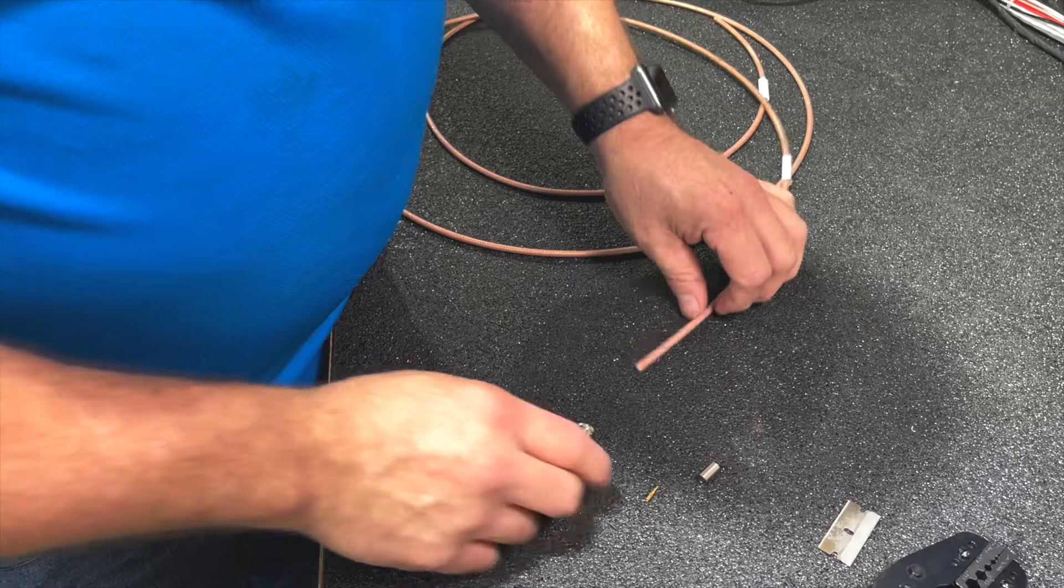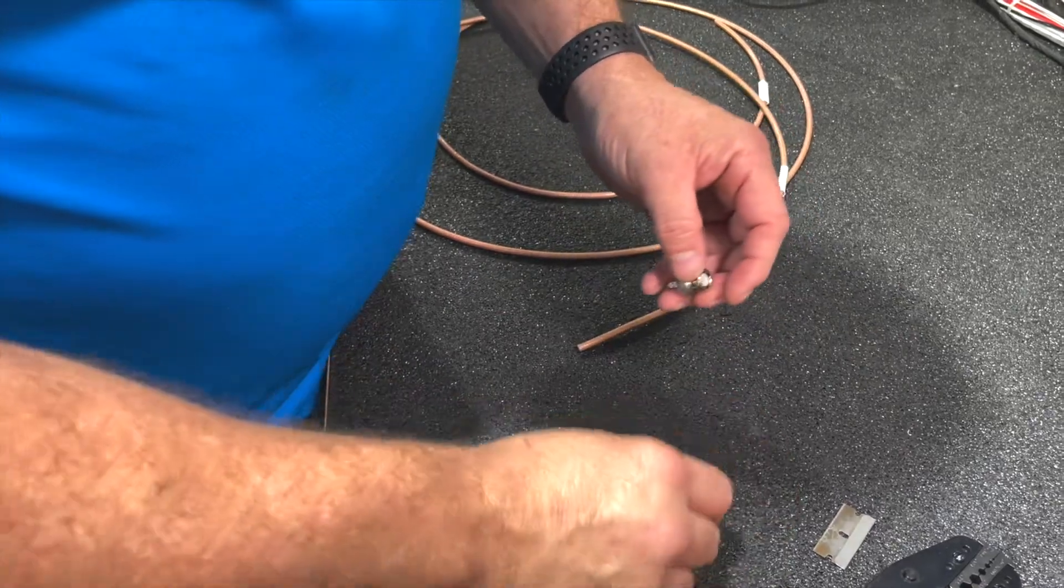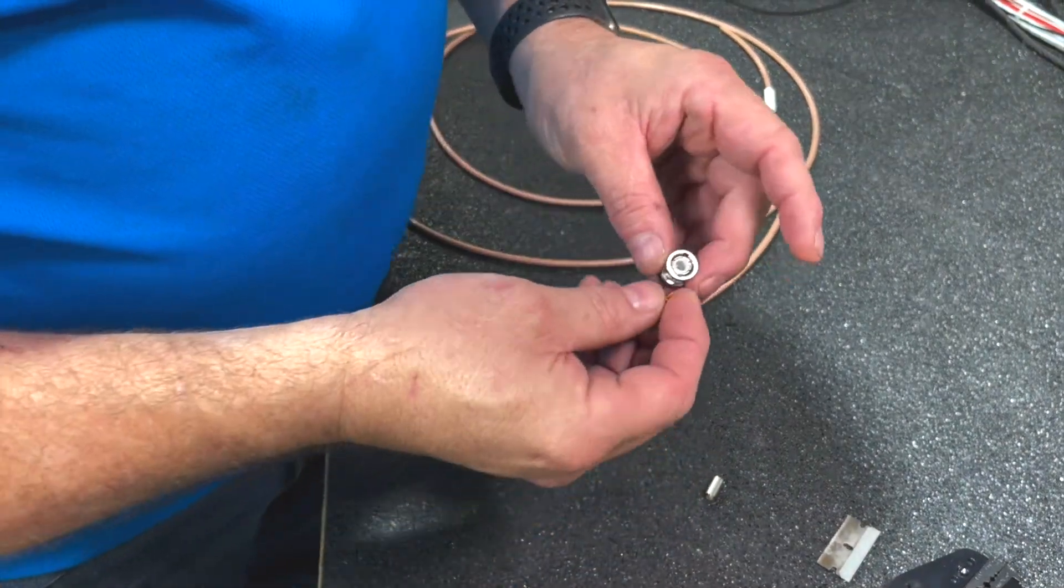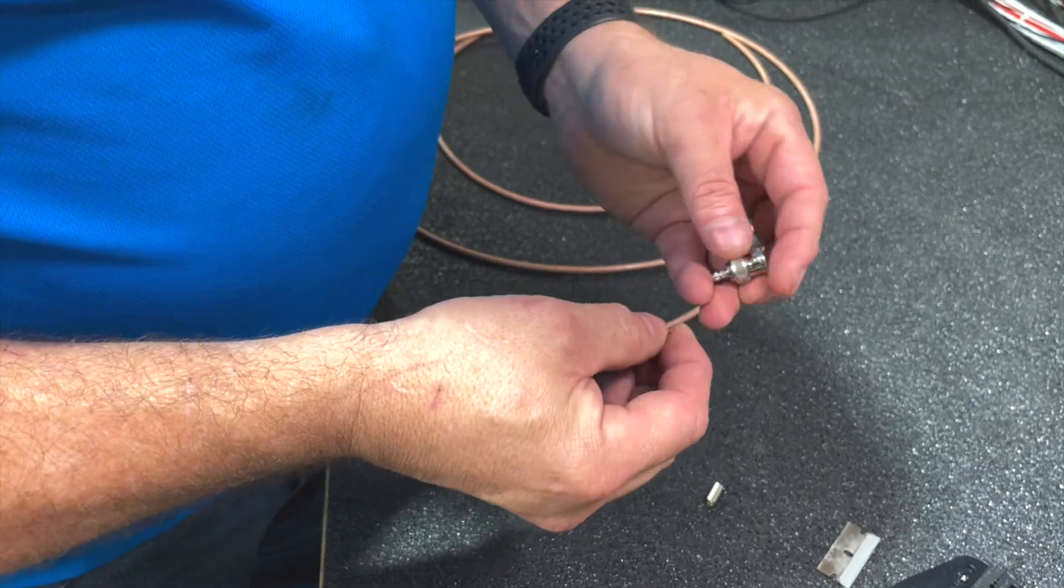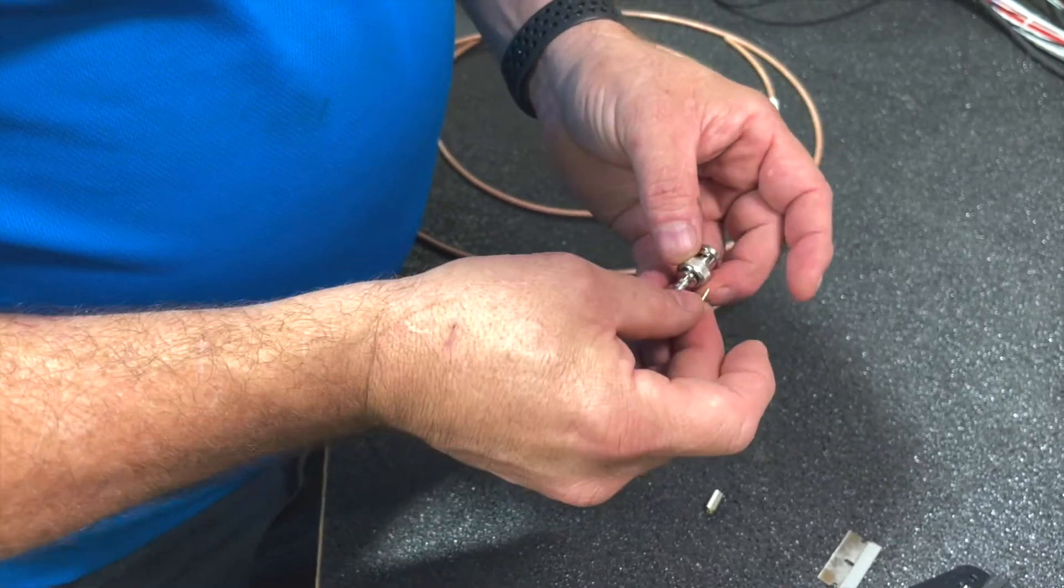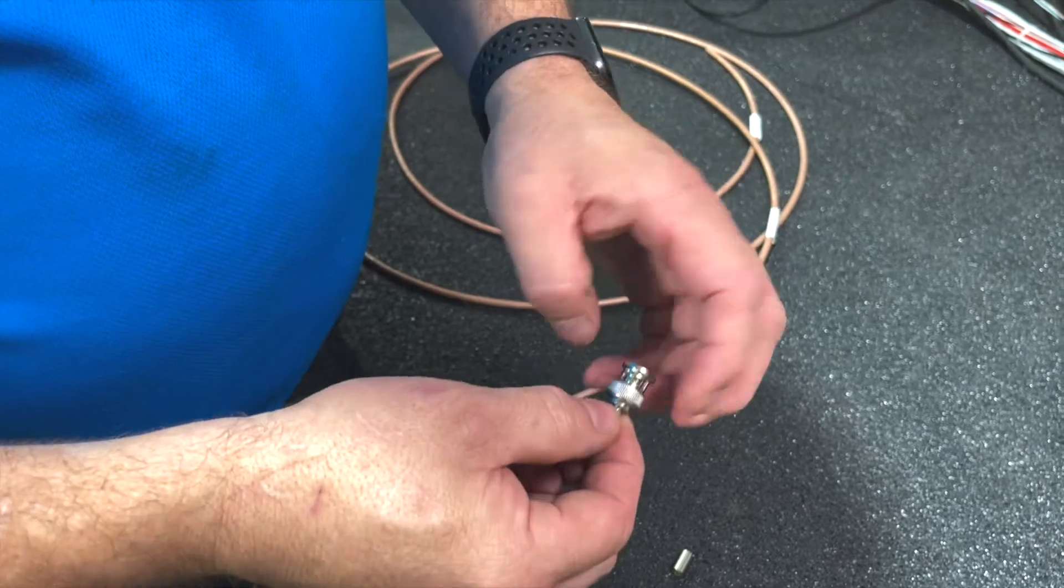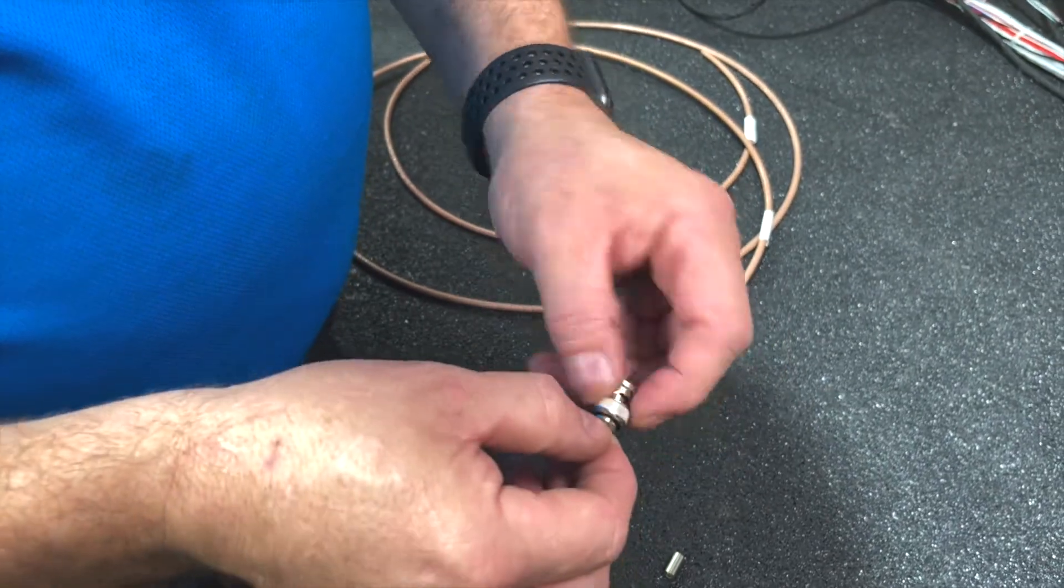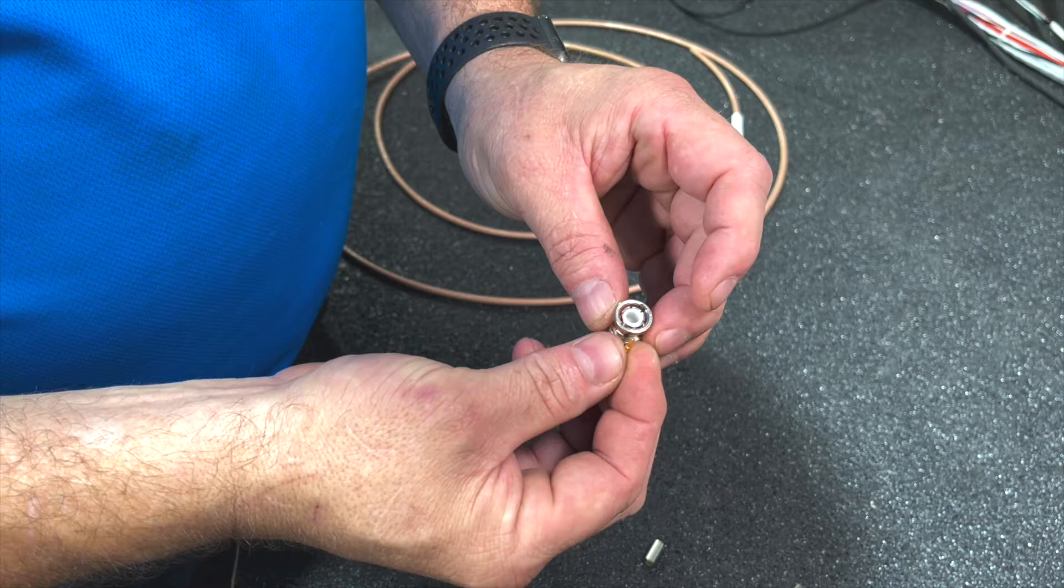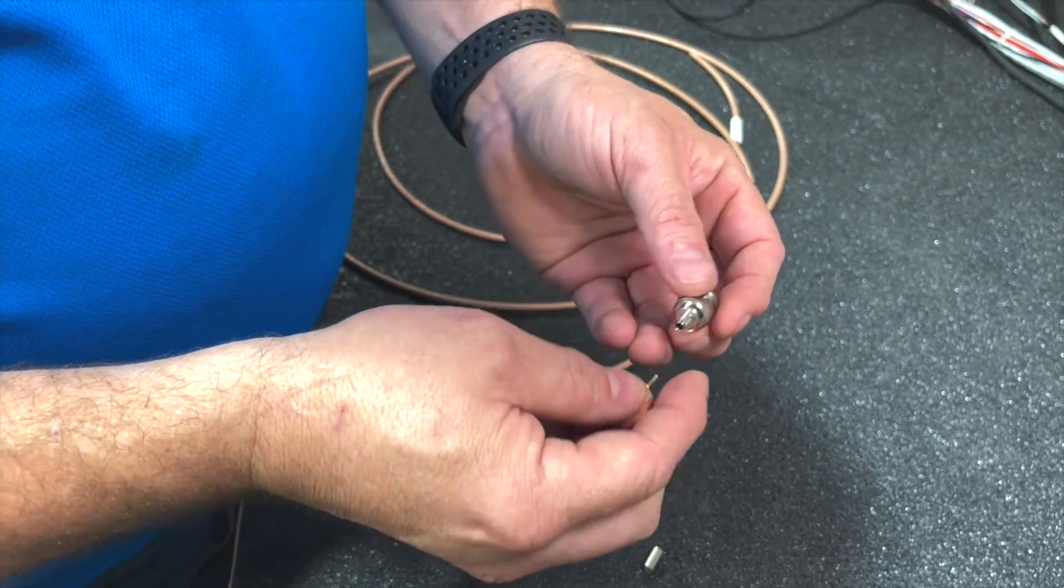Alright, so here we've got our BNC connector. This one here happens to be a male connector with the pin. They do make a female version. The TNC connectors are the same way. The difference is that they're screw-on instead of this half-turn connect. But the pins and stuff are all going to be the same. The way that we crimp them are going to be the same.